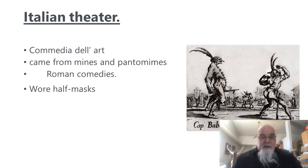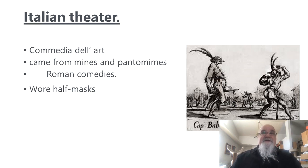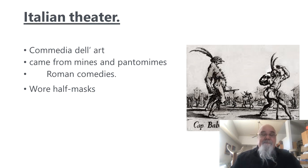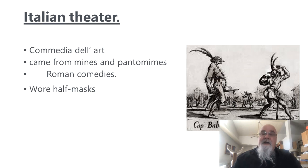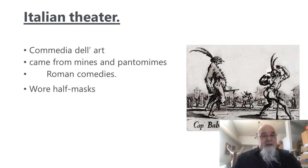Probably the hot spot would be Italy. And in Italy, they had developed a specific form of theater called Commedia dell'arte. This came from the mimes and the pantomimes who were performing in the streets, and they copied a lot of what they found from the Roman comedies, which were a little bit raunchy and quite intense on drama. When they performed, they wore half masks, very stylish masks, so you know who the characters were.